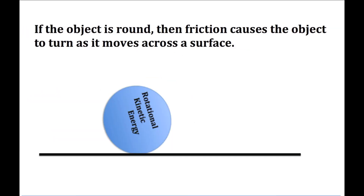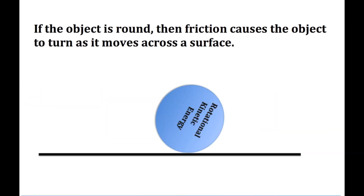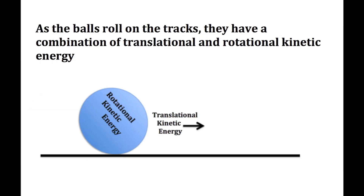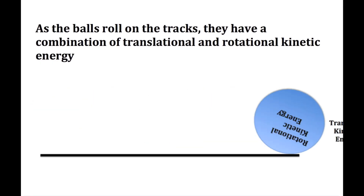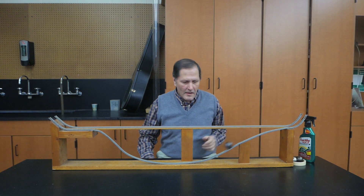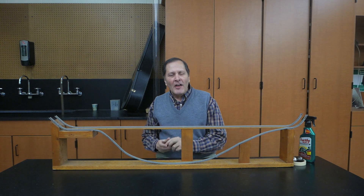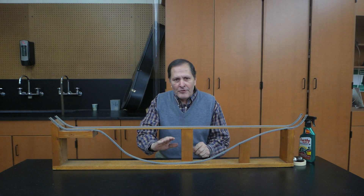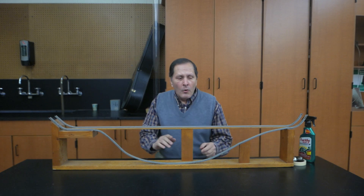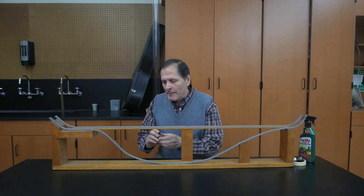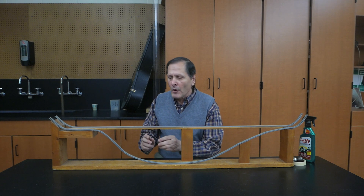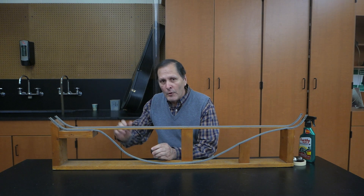When an object is round, it's friction that causes it to turn as it moves across the surface. These balls have a combination of translational and rotational kinetic energy as they move across the track. For the ball to climb the opposite side, it's got to change those kinetic energies back into gravitational potential energy. If I try making this track too low, the sides would become steeper, and if it's too steep, we're not going to have enough friction between the ball and the track to change that rotational kinetic energy back into gravitational energy to climb the track.